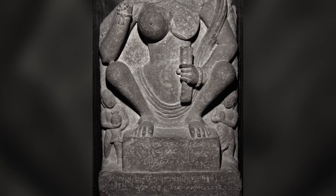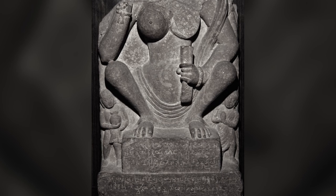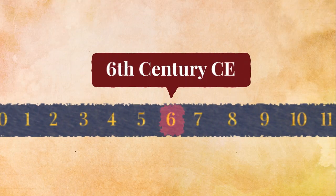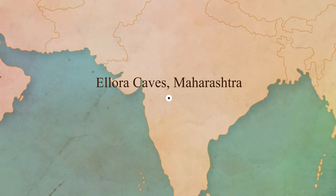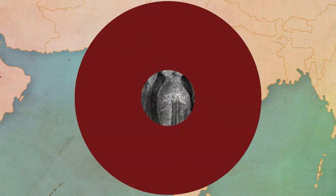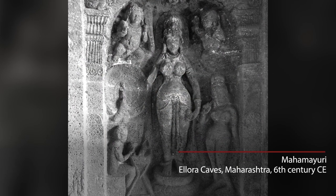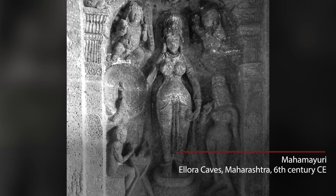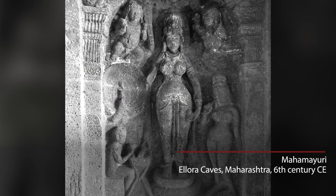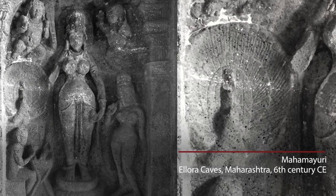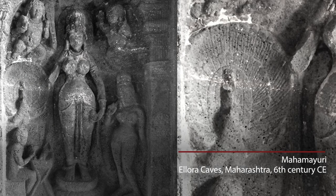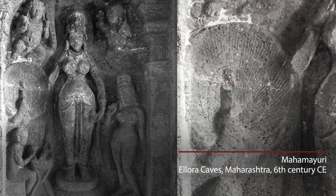Saraswati was revered not just by Hindus, but also Buddhists and Jains. And therefore, when we go to Ellora, which is about the 8th century, we find the goddess holding a lotus flower; next to her is a peacock and a student sitting in front of her on a desk.